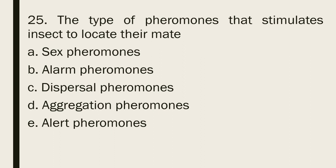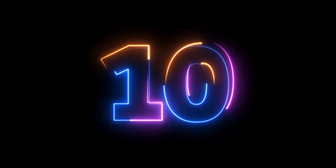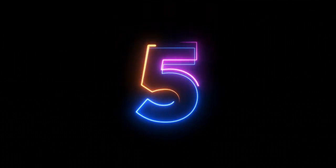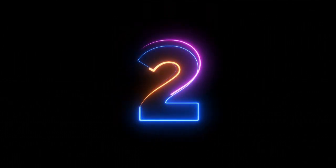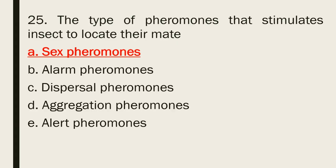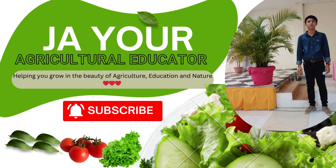Question 25: The type of pheromones that stimulates insects to locate their mate: a. Sex pheromones b. Alarm pheromones c. Dispersal pheromones d. Aggregation pheromones e. Alert pheromones. The correct answer is letter a, sex pheromones.